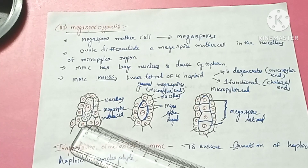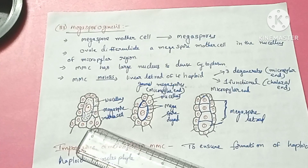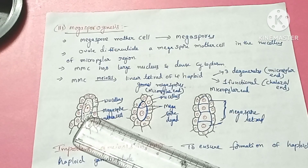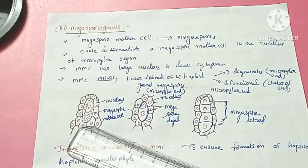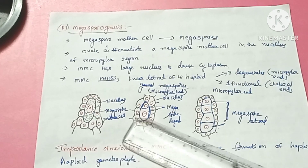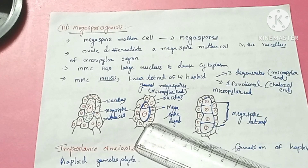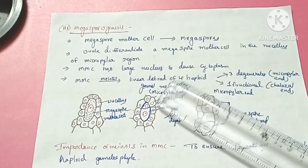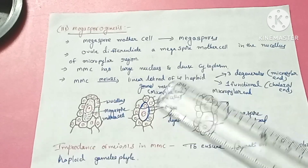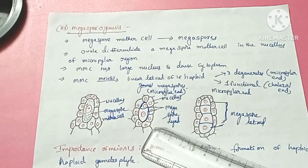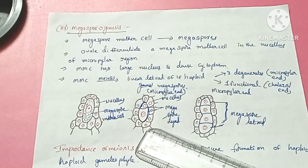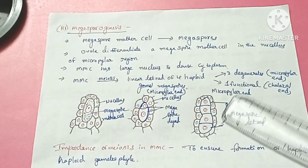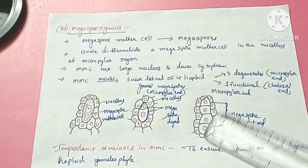This megaspore mother cell undergoes meiosis. The cell is first converted into a diad — a two-celled, two-nucleated condition — and then it again undergoes meiosis to form a tetrad of haploid megaspores.